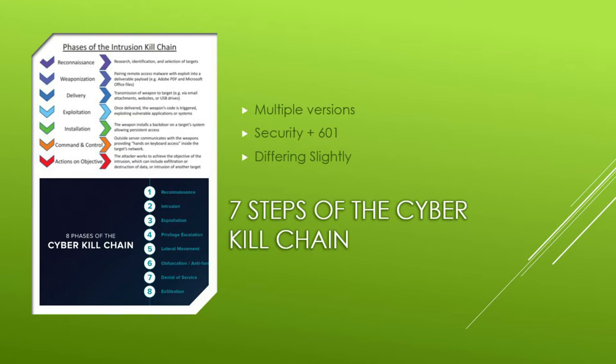The cyber kill chain consists of seven steps: reconnaissance, weaponization, delivery, exploitation, installation, command and control, and finally actions on objectives — which is more open than versions that list exfiltration as the last step. Not every scenario will end with data exfiltration, because some threat actors may just want to cause disharmony and leave with nothing. Even though there are multiple versions, they still basically say the same thing, and you'll be able to adapt after understanding how to apply the top IOCs into the framework.